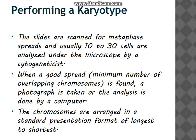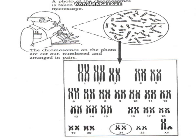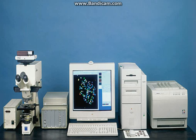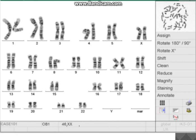Further analysis is done by computer. A computer-assisted karyotype system is now commercially available. In this system, a television camera and a computer are coupled to a microscope. As the chromosomes in metaphase are located, the television camera captures the image, which is transported to a computer where it is analyzed and processed into a karyotype. A person identifies the ideal spread under the microscope, the photo is taken, and then sent to the computer where it is processed into a karyotype.